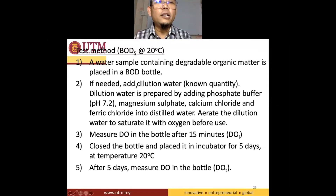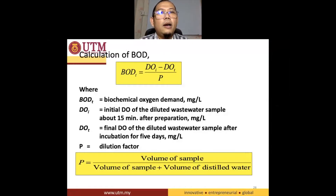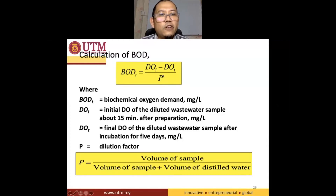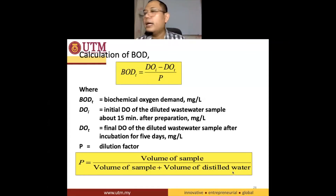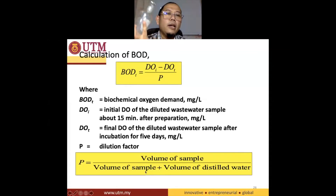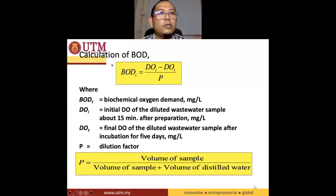Let me share my slides again. The dilution water contains phosphate buffer, magnesium sulfate, ferric chloride, and so on. The BOD formula is: BOD = (DO_initial minus DO_day5) divided by the dilution factor, where the dilution factor equals volume of sample divided by (volume of sample plus volume of distilled water). For the no-dilution case, the volume of sample is 400 mL and distilled water is zero, so 400 divided by 400 equals 1 — and that's why 7 minus 5 divided by 1 gives you the BOD without dilution.